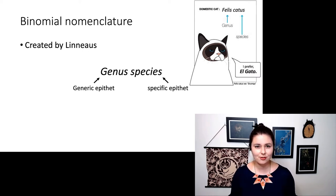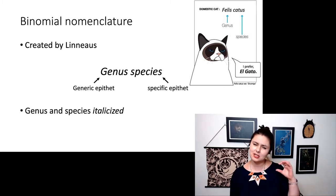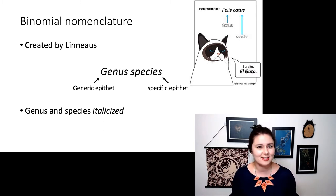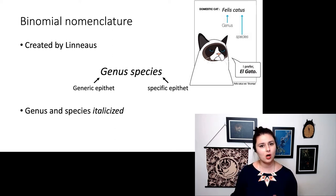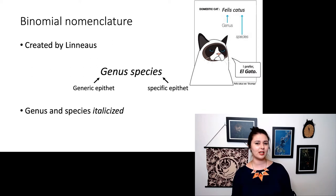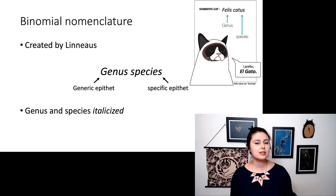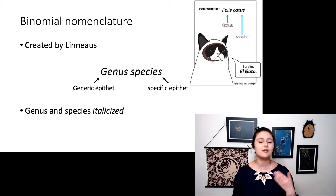You might notice the formatting: both names are italicized, we capitalize the genus name, and the species name is lowercase. This is really important. When you format a scientific name correctly, you are letting everyone know that you know what's going on with species. When I see someone format a scientific name correctly, I'm more likely to listen to the rest of what you have to say. This is very important academic code-switching in biology.